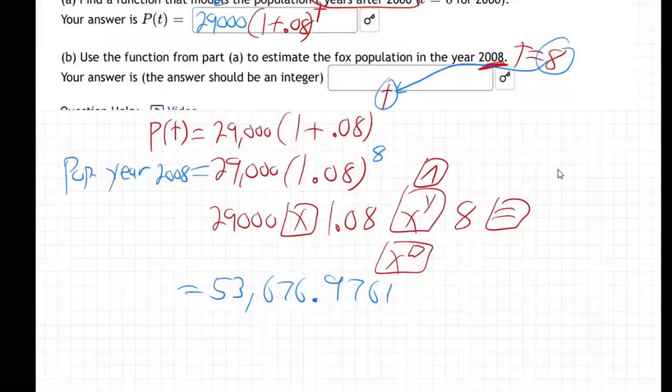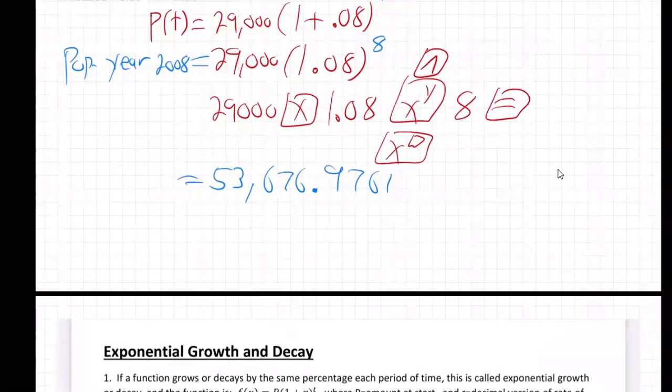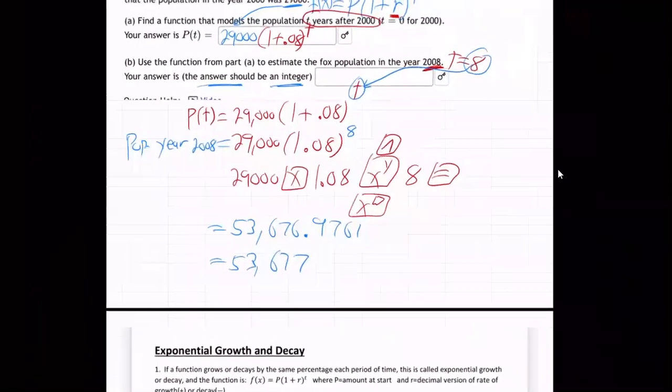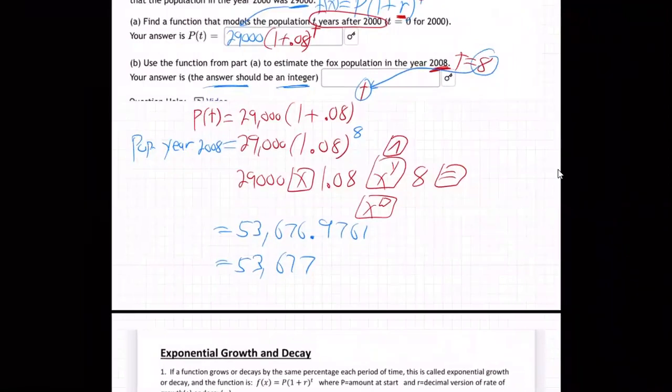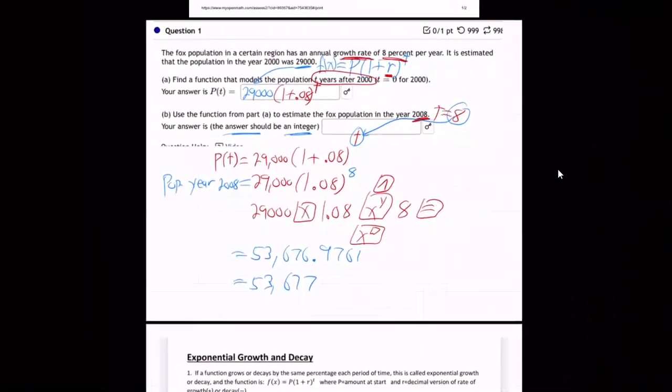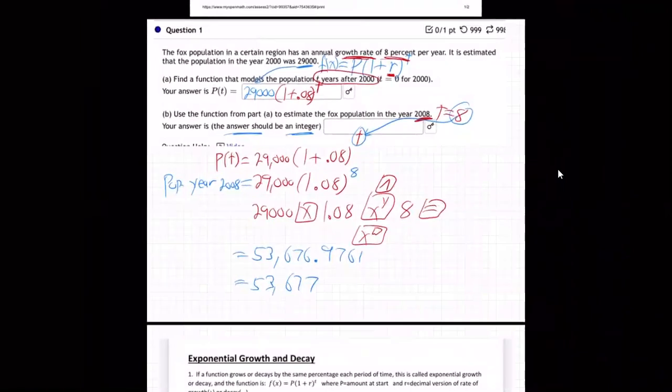Now they say the answer should be an integer. Meaning we're just going to round it off. So it's going to be 53,677. But you can't have part of a fox. We're talking about the fox population. Like how many foxes are there in the region in the year 2008, if the growth continues just as it has. That's what we're, you know, this is called exponential growth. Whenever something grows by the same percentage every period of time. That's called exponential growth.